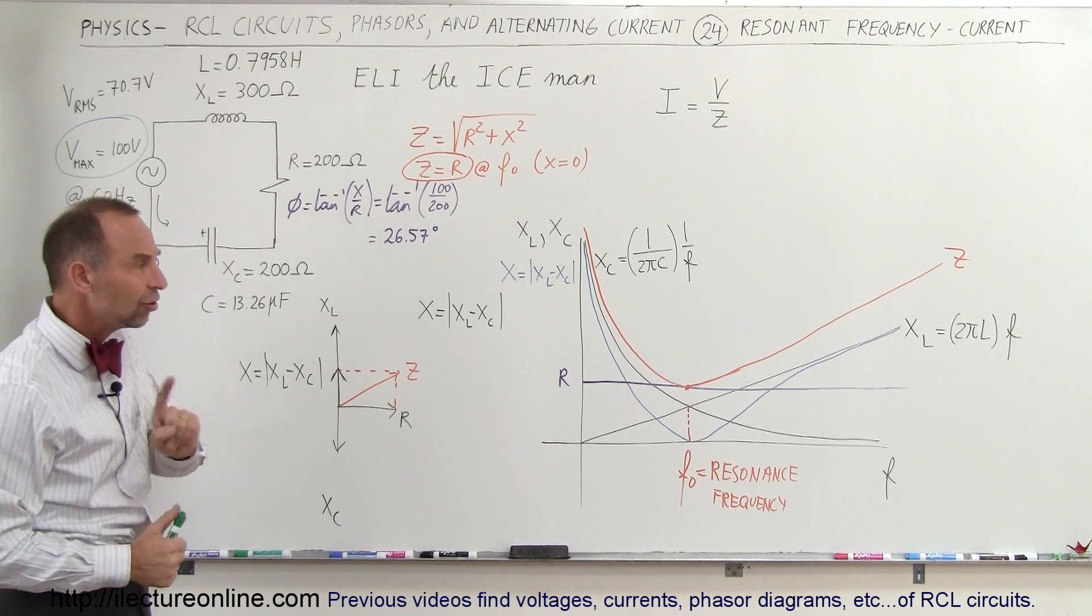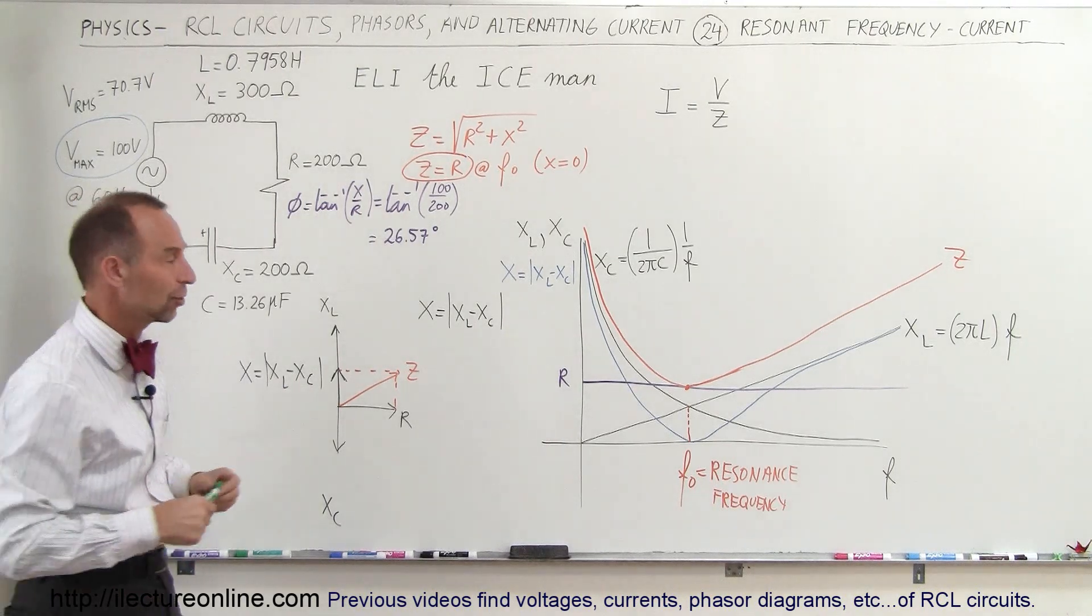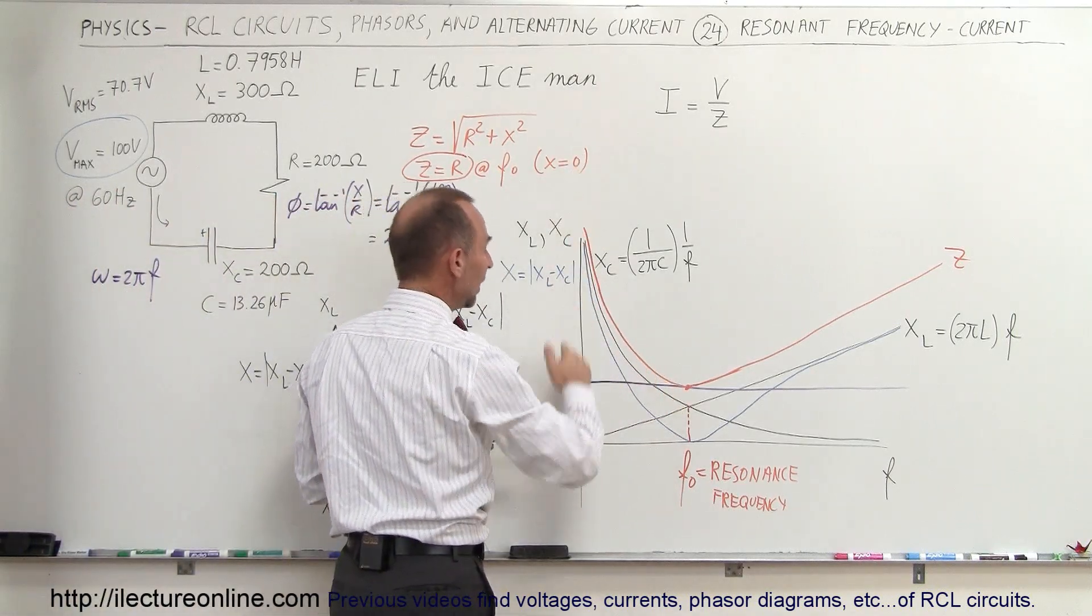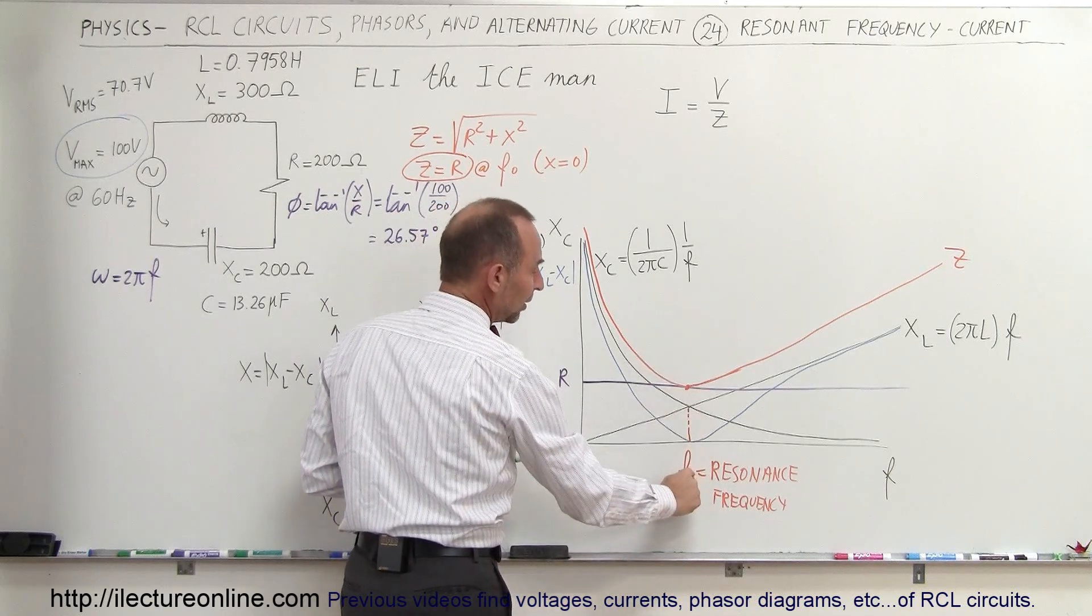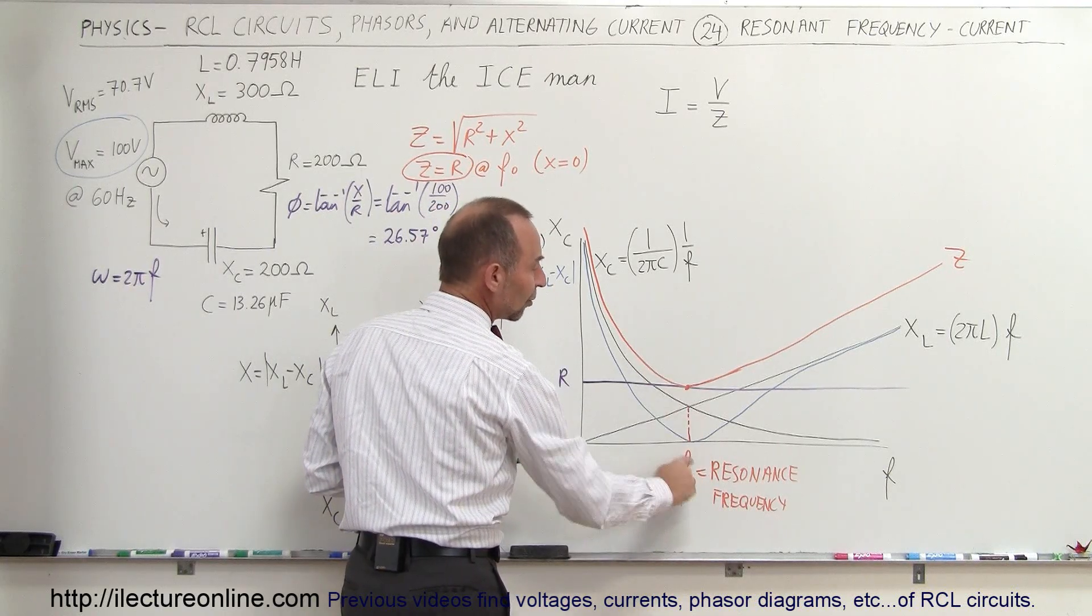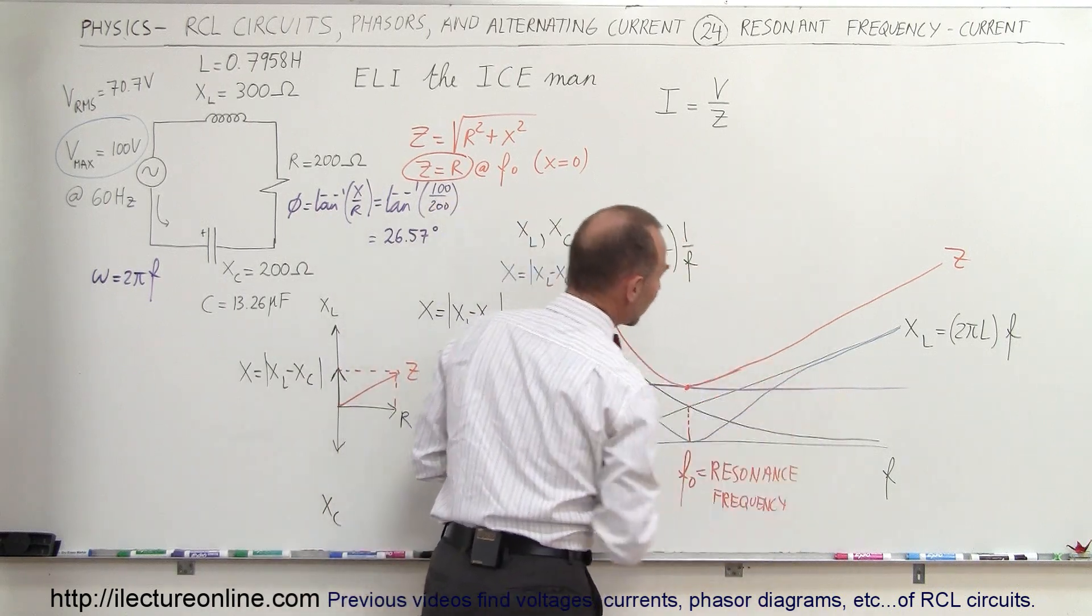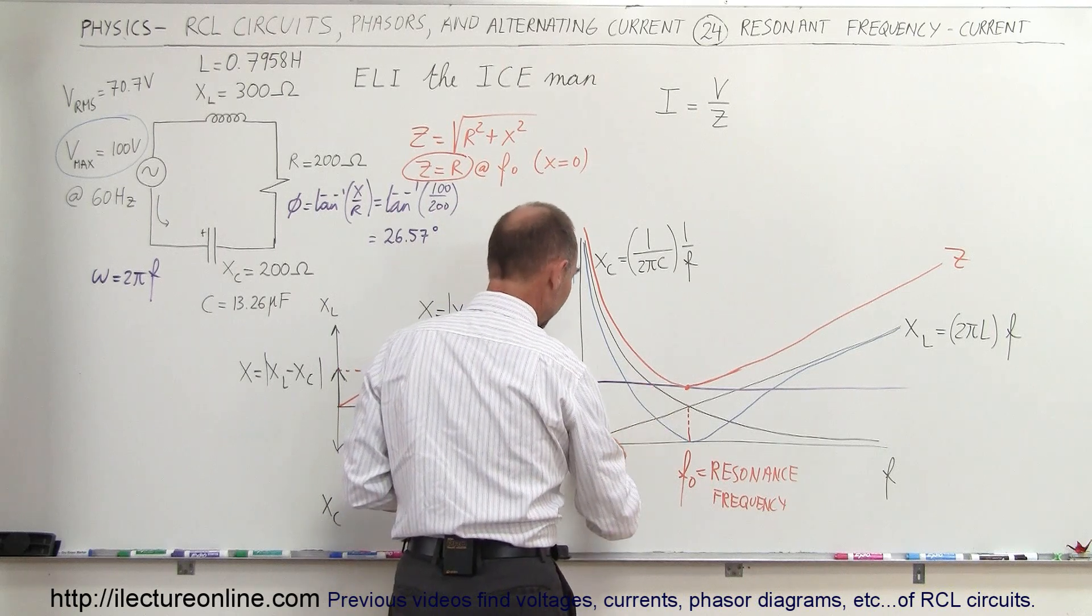So that's when the opposition to the current will be the lowest, which means at that point we'll have the highest current in the circuit. Notice here when the impedance becomes almost infinitely high, the current will be almost zero. We reach a maximum value when the frequency reaches a resonance frequency, and as the impedance increases, the current begins to decrease again. And so the current on this graph should look like this.